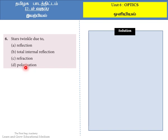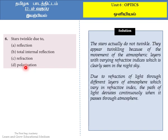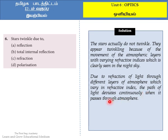We should know the exact concept, then we can easily answer this question. The stars actually do not twinkle. They appear twinkling because of the movement of the atmospheric layers with varying refractive indices, which is clearly seen in the night sky. Due to the refraction of light through the different layers of atmosphere, which possesses different refractive indices, the path of light will deviate continuously when it passes through the atmosphere.